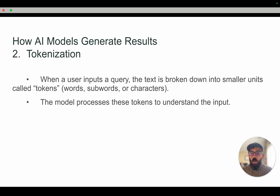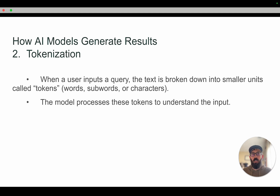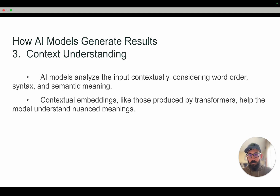That process is called tokenization. So when a user inputs a query or a search term or a question, the text is broken down into smaller units called tokens. That might be a word, or a part of a word, or an individual character. The model processes these tokens to understand the input and it helps put it in context relative to other tokens and all the data that it's been trained on.